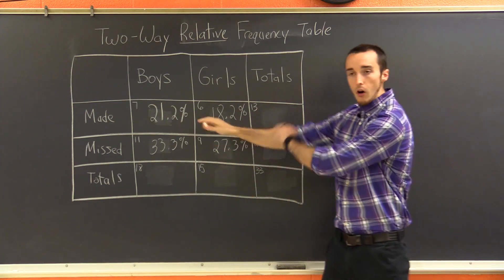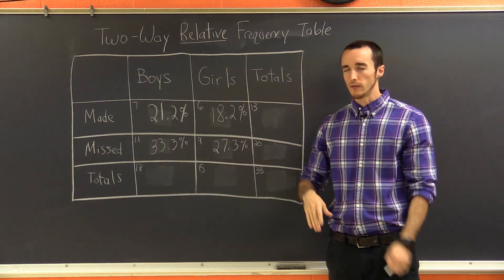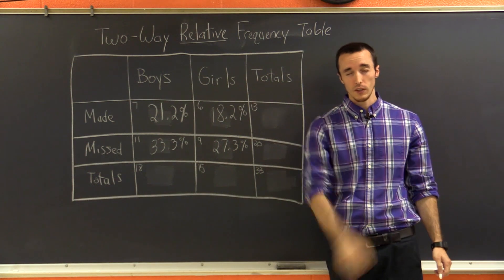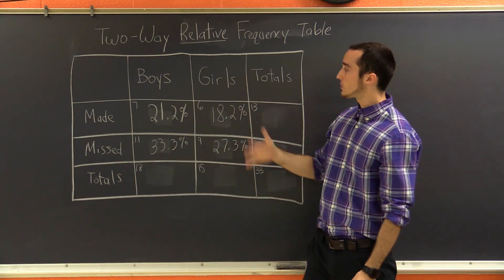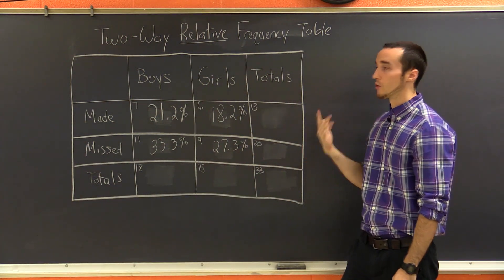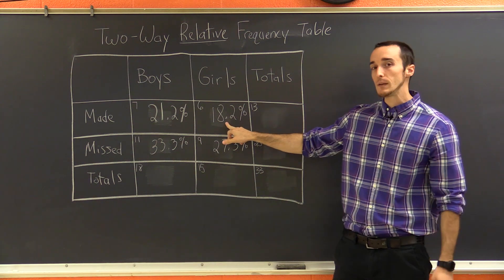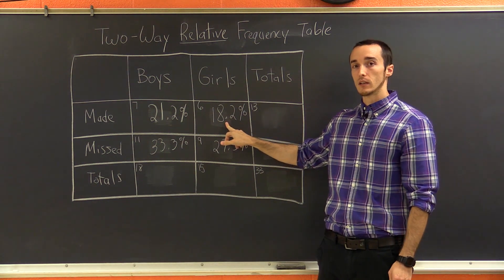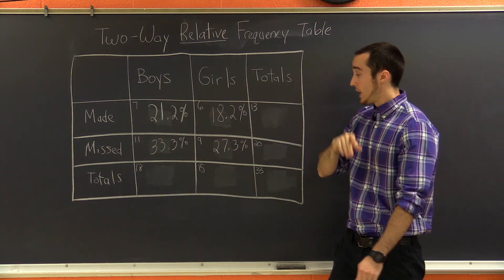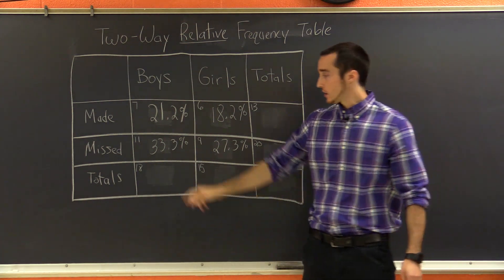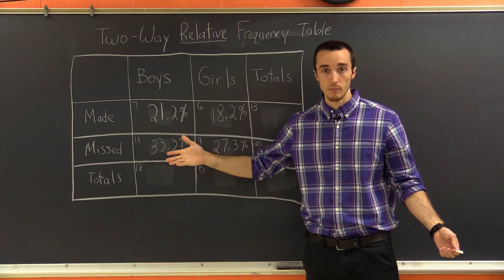So all of these percentages tell you, for instance, if I were to randomly point to a person in the room, and I wanted to know what was the chance that I was pointing to a girl who made a basket, 18.2% chance of that happening. Or if I wanted to randomly point, and is it a boy who missed a basket? Well, there's a 33 and a third percent chance of that happening.